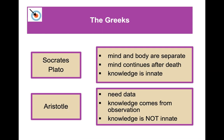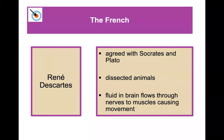Aristotle, on the other hand, thought that knowledge comes from observation. He felt knowledge was not innate and felt a strong need for data. The French philosopher René Descartes agreed with Socrates and Plato that knowledge is innate. He did lots of dissection of animals, showing that fluid flows through nerves to muscles causing movements, and he made many advancements in our understanding of how people think.